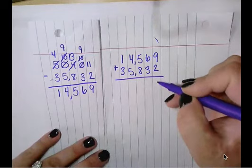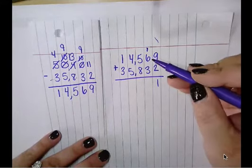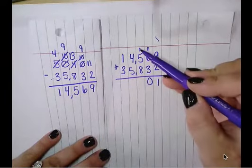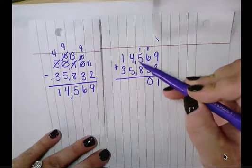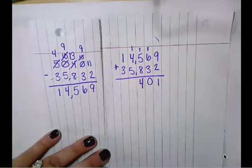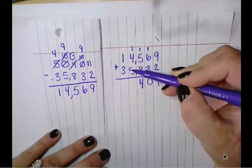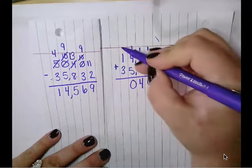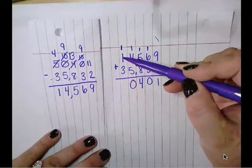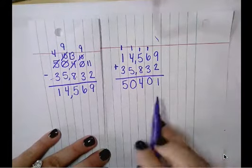9 plus 2 is 11. Carry my 1. 6 plus 1 is 7. 7 plus 3 is 10. 1 plus 5 is 6. 6 plus 8 is 14. 1 plus 4 is 5. 5 plus 5 is 10. 1 plus 1 is 2. 2 plus 3 is 5.